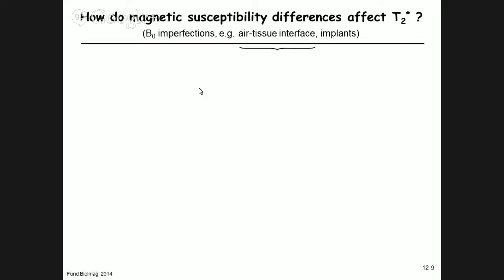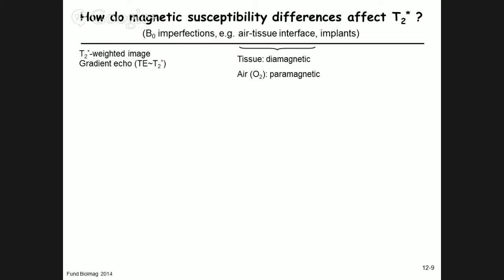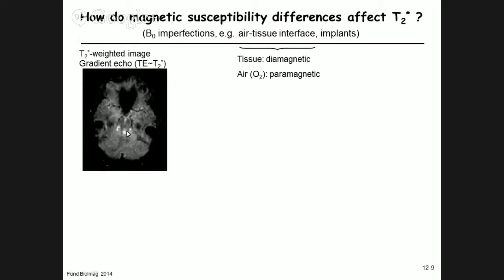Now let's look at the effect of magnetic susceptibility differences between air and tissue. Air is paramagnetic, tissue is diamagnetic; this creates a susceptibility difference and, like with vessels, creates a gradient in the magnetic field that changes gradually in space, producing effects on the T2 star-weighted gradient echo image. This can produce ugly images — signal voids — for example, black regions near the front of the brain. Can you guess why?